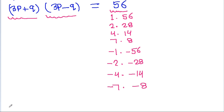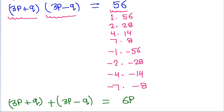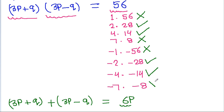If we add both factors — (3p plus q) and (3p minus q) — then the sum is 6p. So the sum of both factors must be a multiple of 6. Here 1 plus 56 is 57, not a multiple of 6; 2 plus 28 is 30, which is a multiple of 6; 4 plus 14 is 18, also a multiple of 6; 7 plus 8 is 15, not a multiple of 6. Similarly, the negative pairs follow the same pattern.